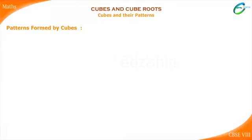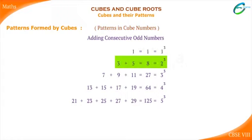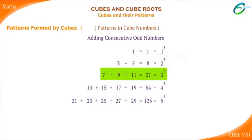Patterns formed by cubes. You have seen different patterns formed by square numbers. Cube numbers also have some beautiful patterns. Observe the patterns: the first row consists of the first odd natural number. The second row consists of the sum of the next two odd natural numbers, which equals the cube of the natural number 2. The third row consists of the sum of the next three odd natural numbers, which equals the cube of 3, and so on.